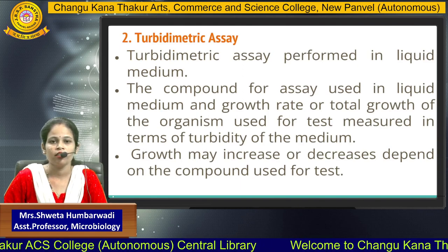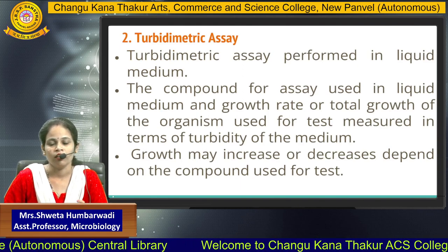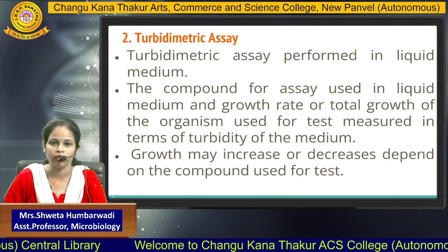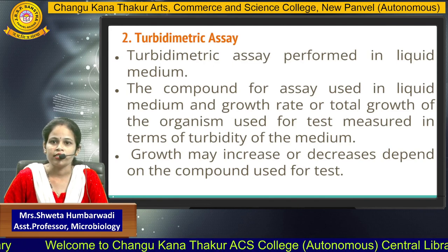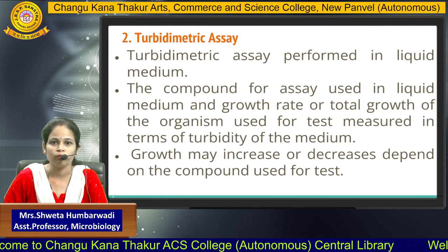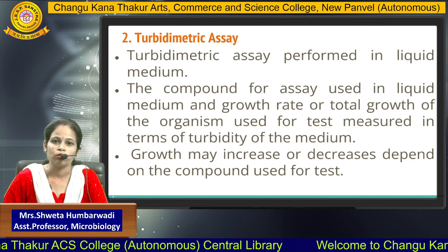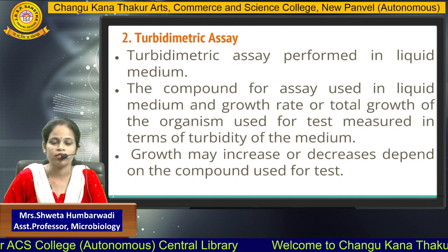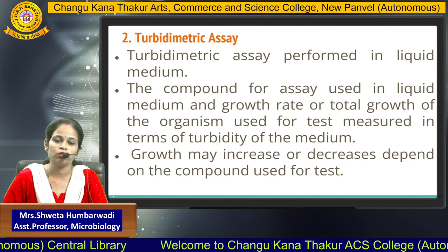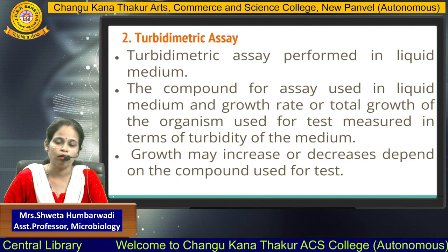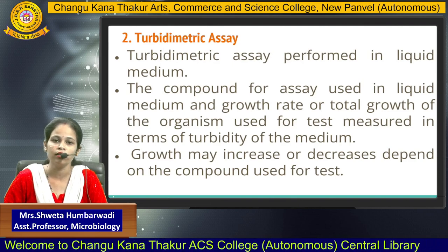In turbidimetric assay we use a liquid medium where we check the growth of an organism in the form of turbidity — that's why it is called turbidimetric assay. The compound used for the assay is added to the liquid medium, and the growth rate or total growth is measured as turbidity of the medium. Growth may increase or decrease depending on the compound used: if the compound is inhibitory there is no growth, and if it is stimulatory, such as a growth factor, turbidity increases.